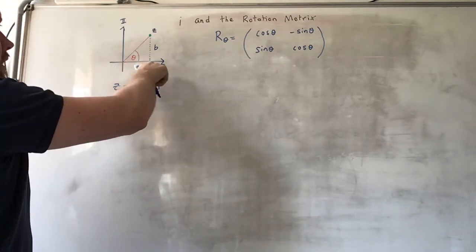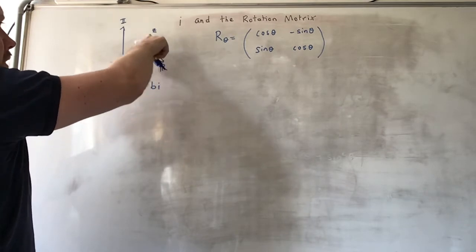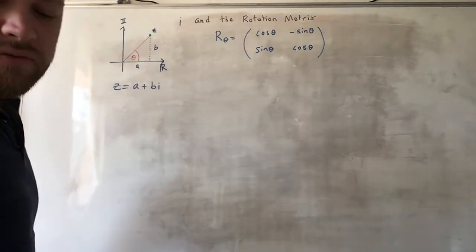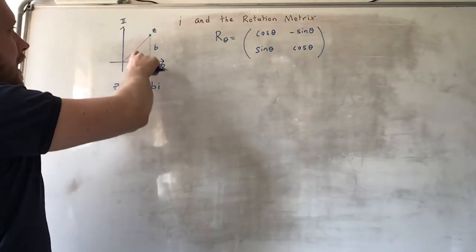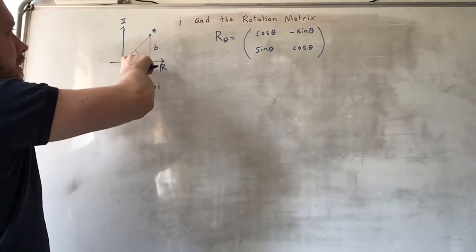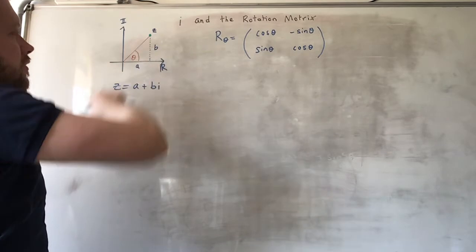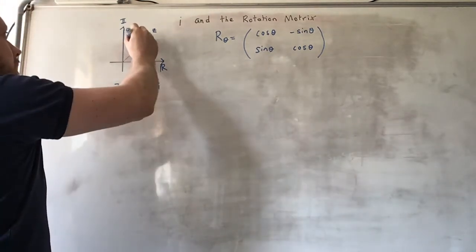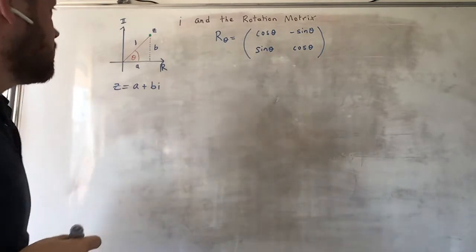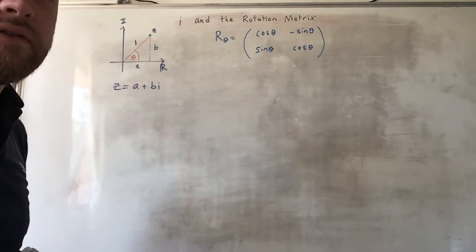But we can also represent this complex number using different means. We can talk instead about the angle here and the length of this line. So if we take a unit circle in the complex plane, i.e. we make that distance 1, just for ease.